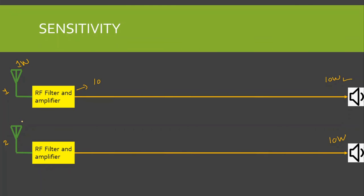For Receiver 2, the minimum signal strength it can detect and amplify is 0.1 Watt. Using an amplifier with gain of 100, that 0.1 Watt becomes 10 Watts. Since Receiver 2 can detect a weaker signal (0.1 W) compared to Receiver 1 (1 W), Receiver 2 has better sensitivity than Receiver 1.